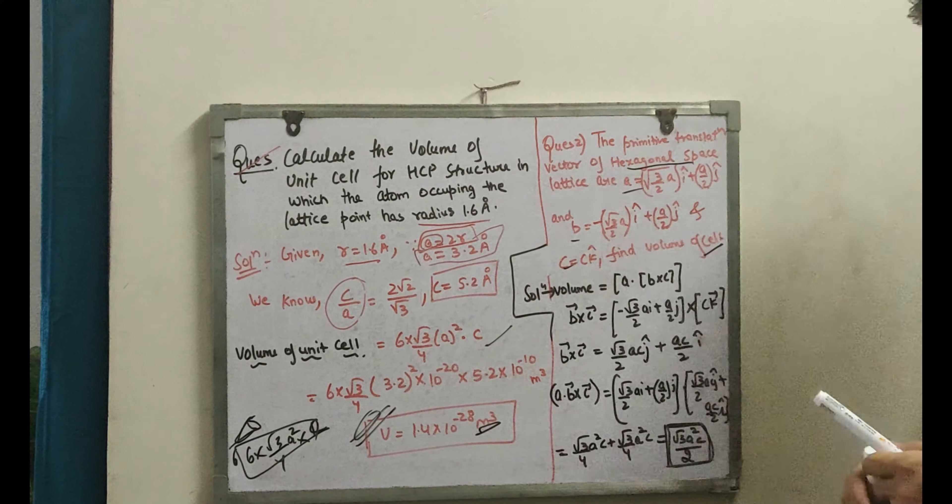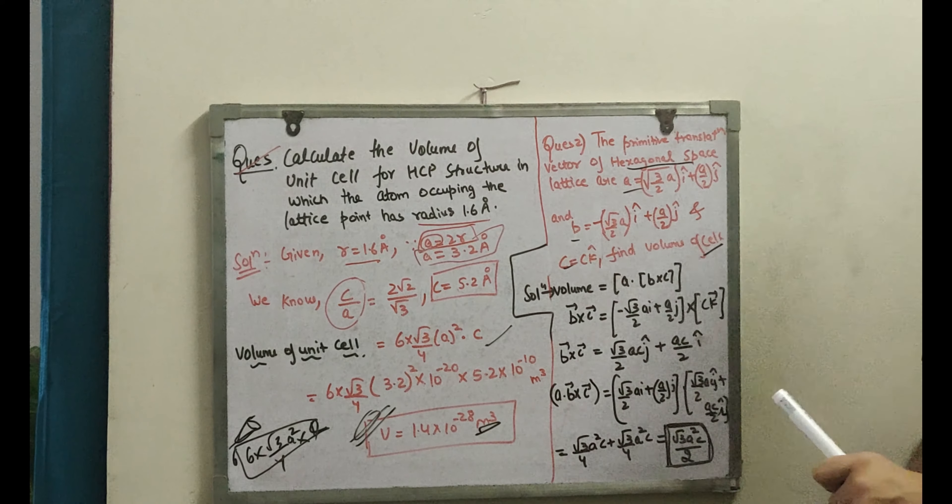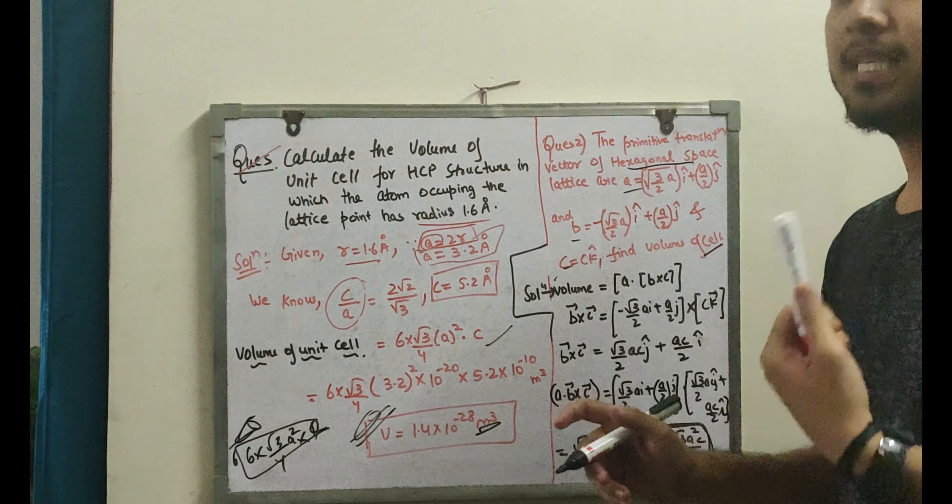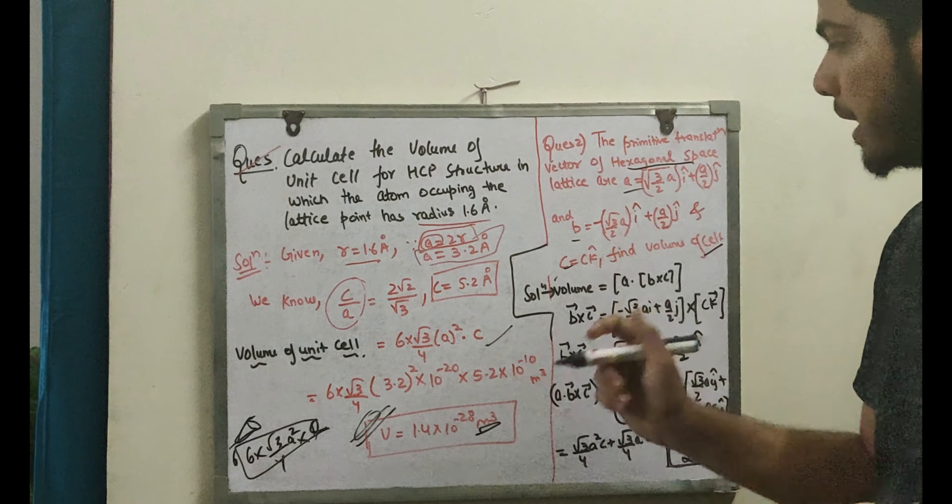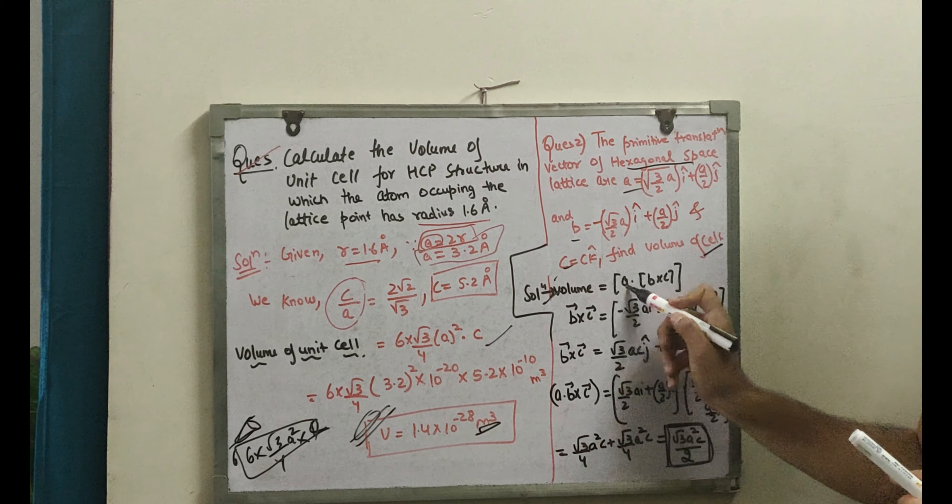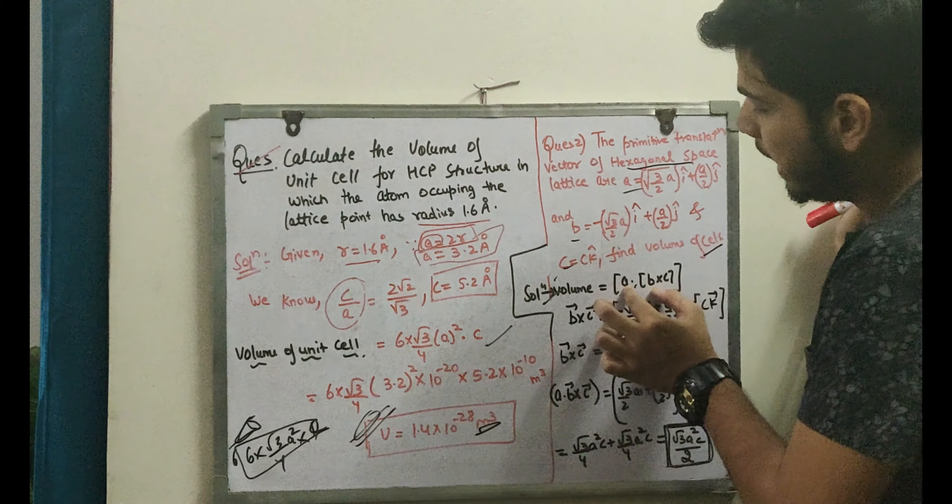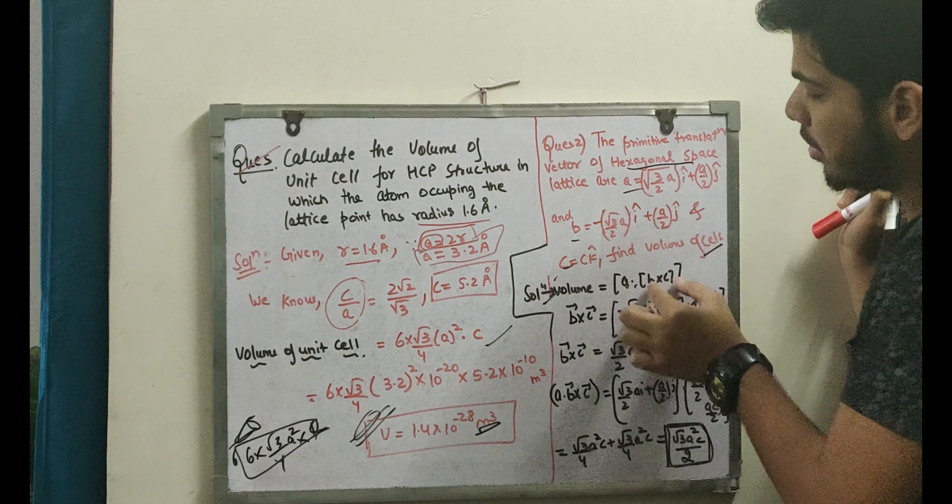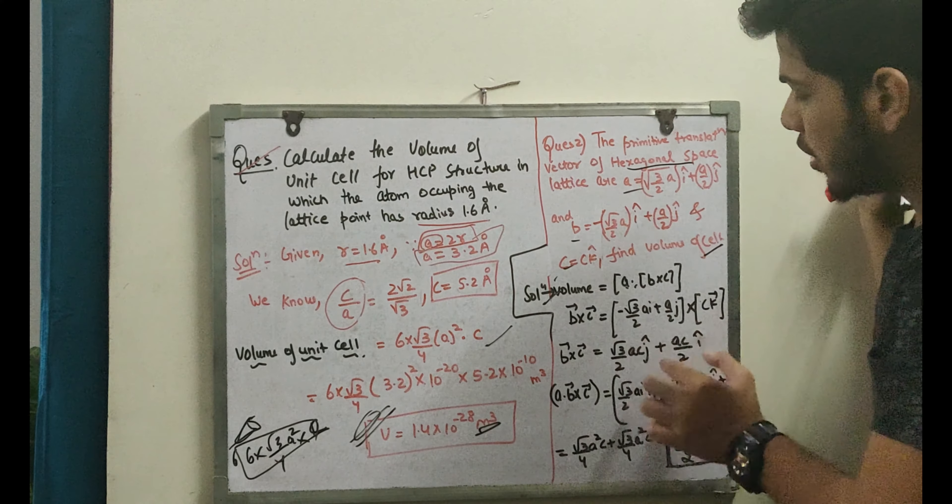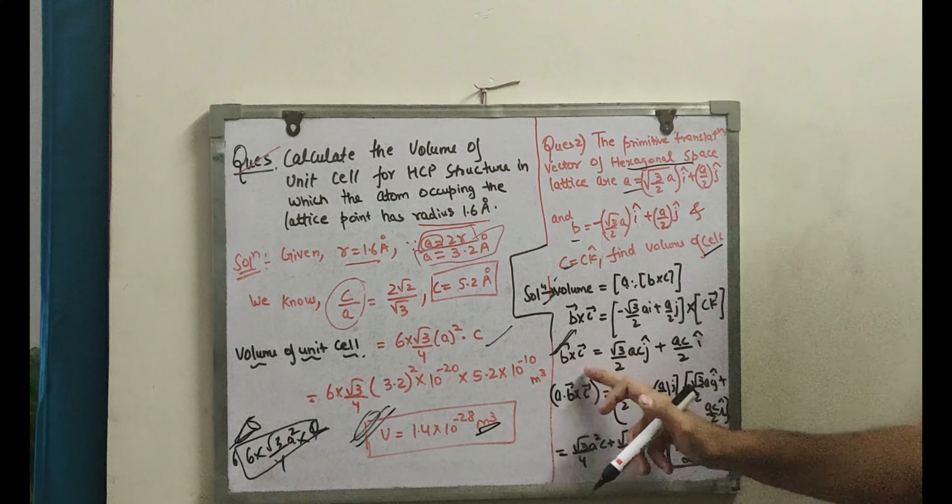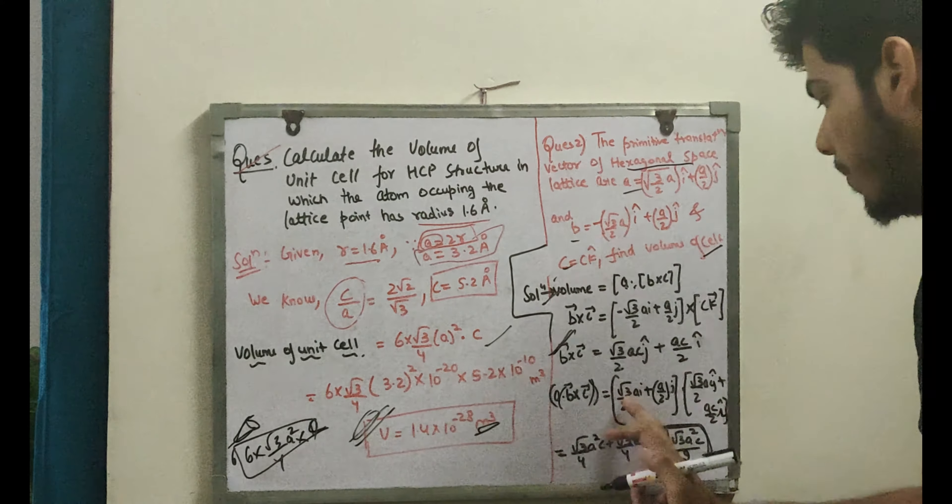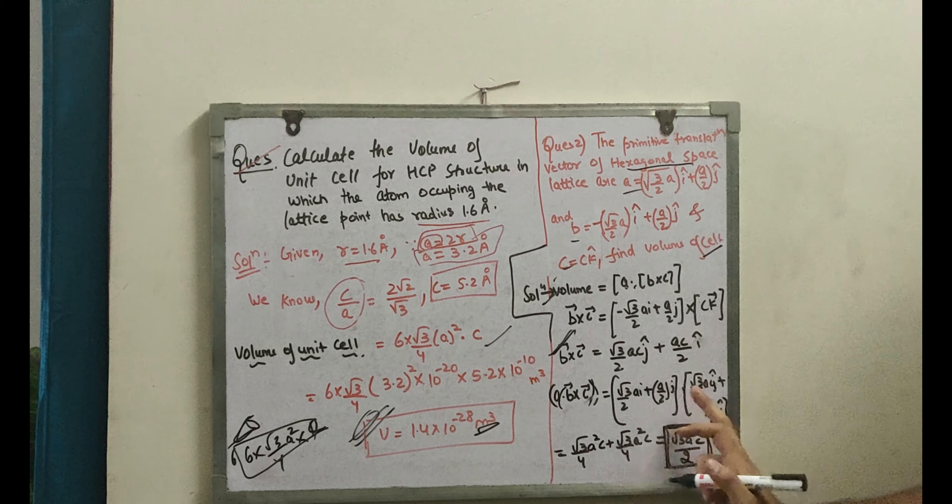The first thing is that this is not just hexagonal close packing concept. This is a cross product. It is A dot B cross C. I hope you all know about cross product. We need to calculate B cross C. This is how we find the volume of the cell.